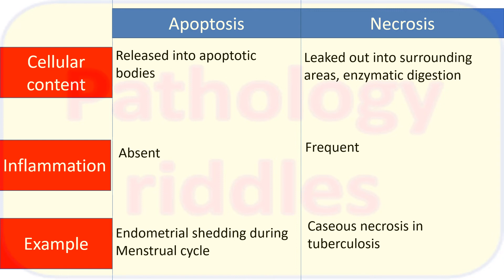An example of apoptosis is endometrial shedding during the menstrual cycle in females. An example of necrosis is the well-known caseous necrosis seen in cases of tuberculosis.